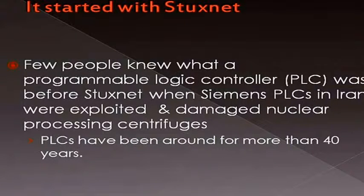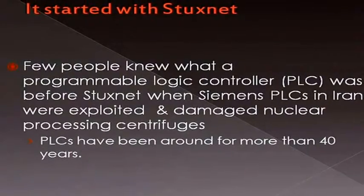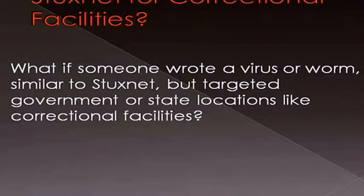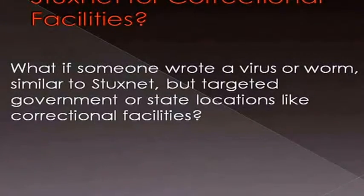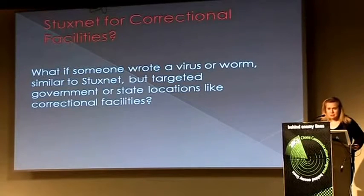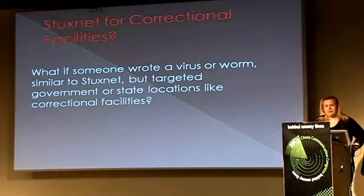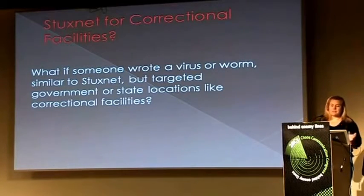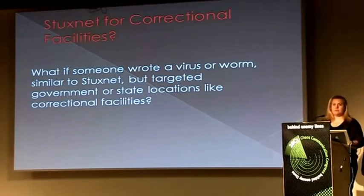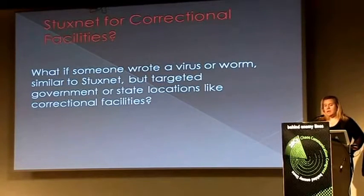It started with Stuxnet — actually it started with a conversation with a Stuxnet researcher here in Germany and another in the United States who had taken apart the code and figured out how it works. I said, what would happen if we could have something like Stuxnet on something else? Everyone knew it was possible, so we said let's see if we can do a proof of concept. Stuxnet for correctional facilities — what if someone wrote a virus or worm similar to that that could just pop all the doors open on death row? Since we did this presentation at DEF CON, people have come up and said they have clearance and can't go public, but they're glad someone is — this is a vulnerability that people have known about for like 20 years.